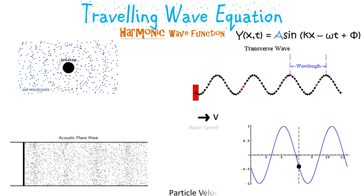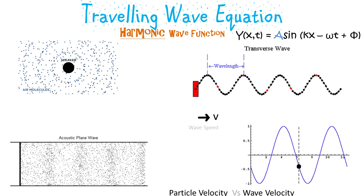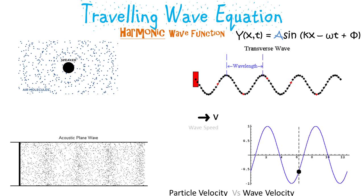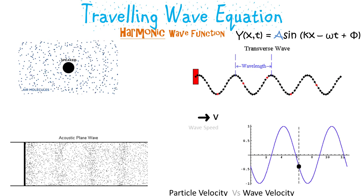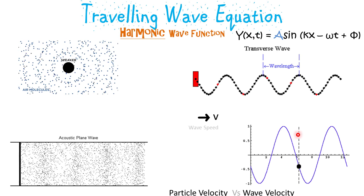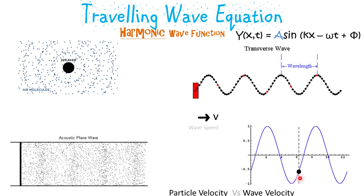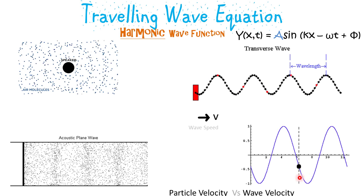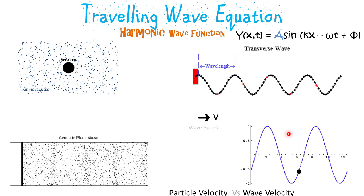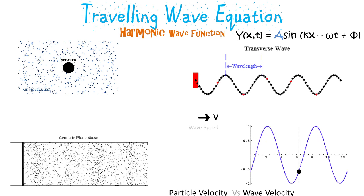It is important to know that particle velocity is different from wave velocity. The velocity of the particle is the velocity with which it oscillates about its mean position, whereas the wave velocity is the velocity at which the energy is transmitted in the forward direction.